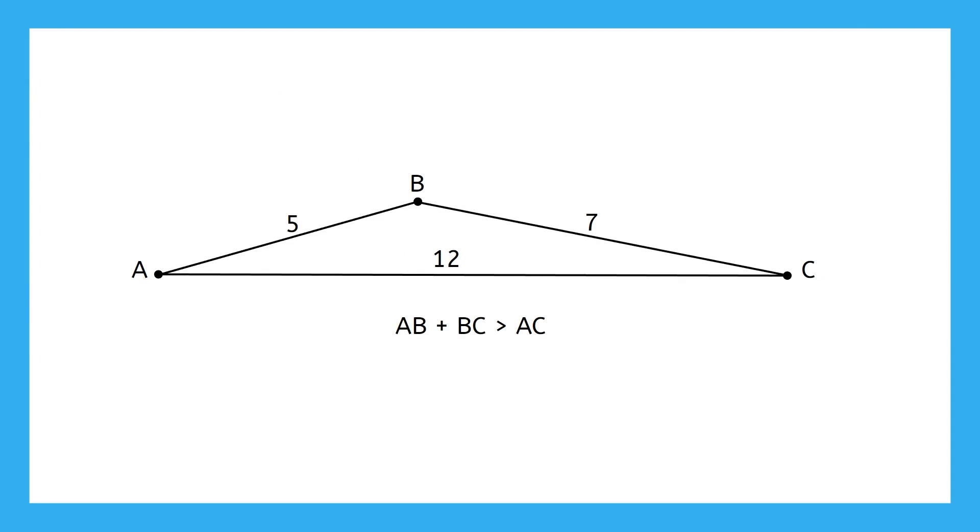Like this? If point B moves off of segment AC, then these numbers no longer make sense. This is where the Triangle Inequality Theorem comes from.